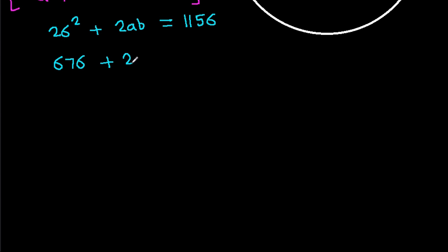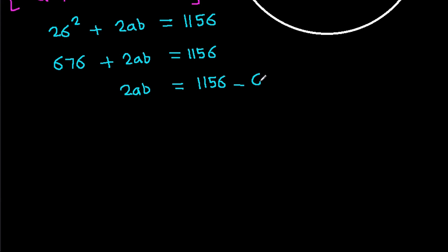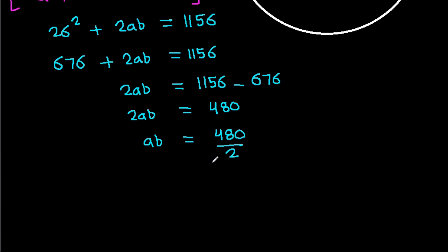So 2ab equals 1156 minus 676, which gives 2ab equals 480. Therefore ab equals 480 divided by 2, which equals 240.